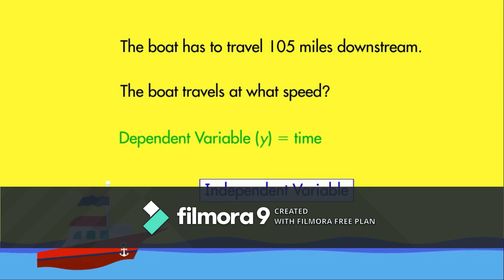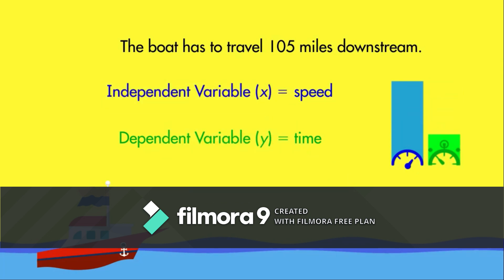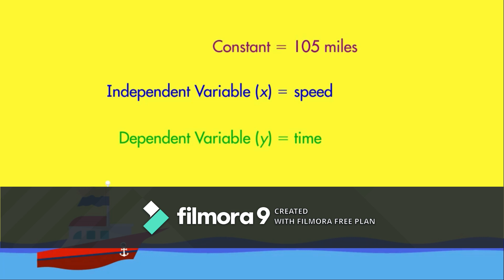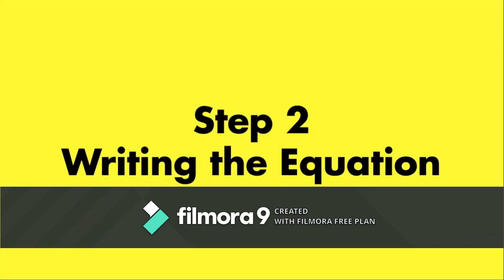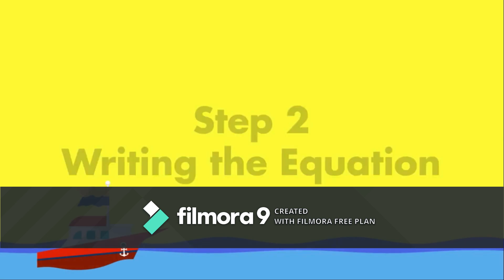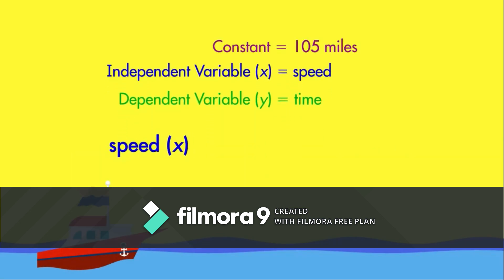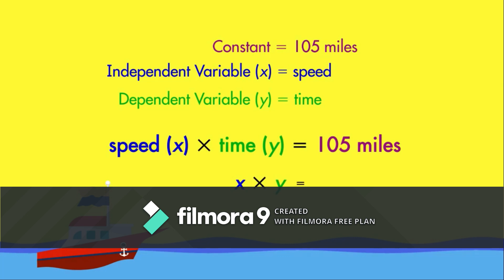To find the independent variable, look for the value that affects the dependent variable. Since the speed of the boat affects how long it takes to travel, speed is our independent variable. The letter X represents this variable. Any other relevant numbers are considered constants because they do not change. In this problem, the distance traveled is the constant. Next, use the variables to write an equation: multiply the boat's speed by the number of hours to find the total distance, or 105 miles. So the equation is X times Y equals 105.